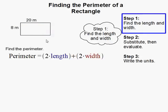Some people simply like to add up the numbers. That would be 20 plus 8 plus 20 plus 8, and then you can get your perimeter that way.